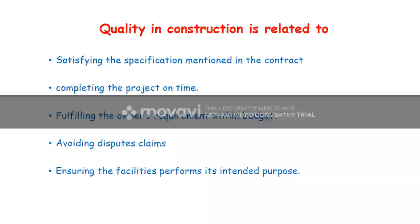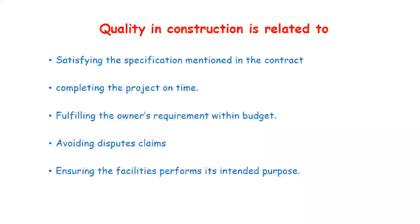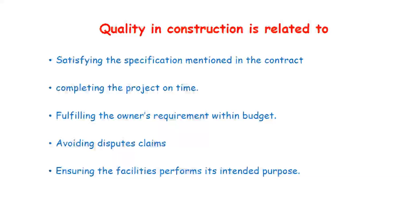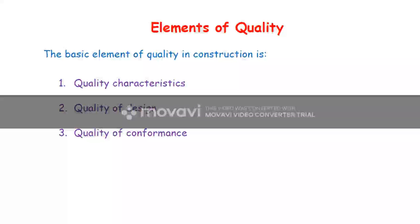The fourth point is avoiding dispute claims — the contractor should not claim any extra amount for any material beyond his estimation. The fifth point is ensuring the facilities perform well for their intended purpose throughout the lifespan of the structure.